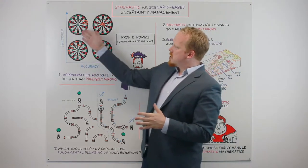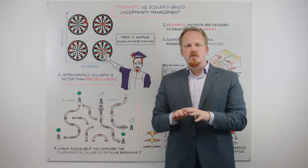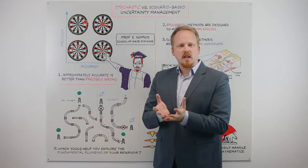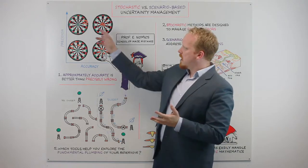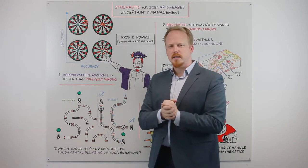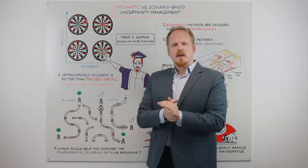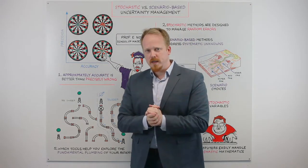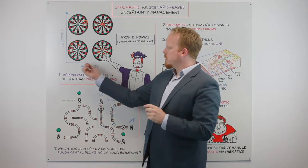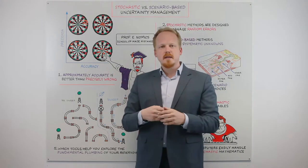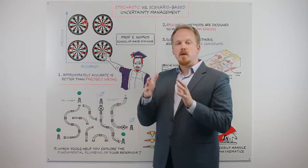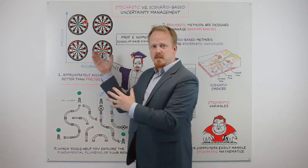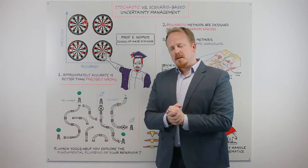Precision is the measure of variance around an estimate — it's essentially the size of the cluster on the dartboard. How repeatable is that effort? It's a random effect, things that you can't necessarily avoid. Accuracy, on the other hand, is referring to the systematic relationship between your estimate and the actual answer — the average of that answer around the target.